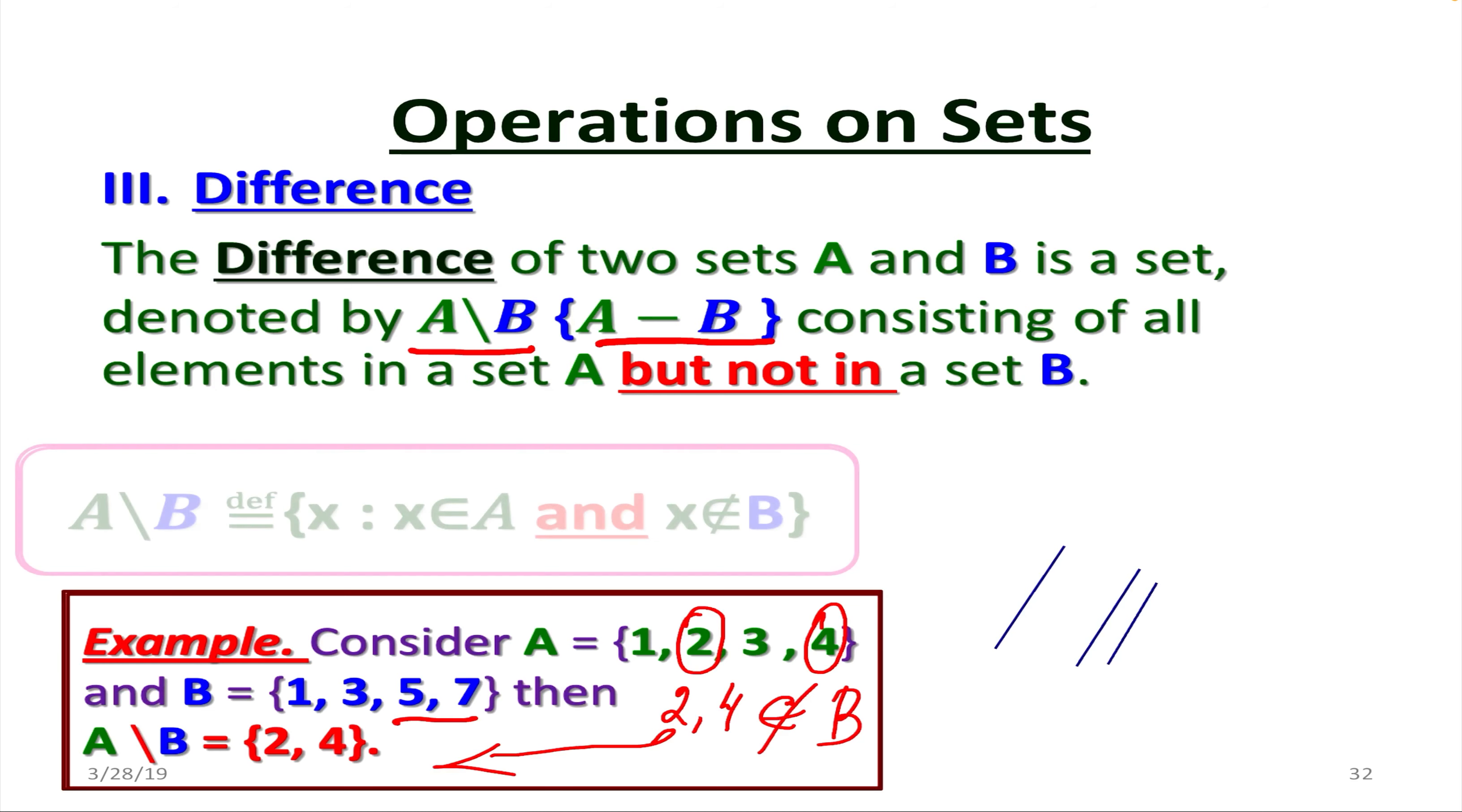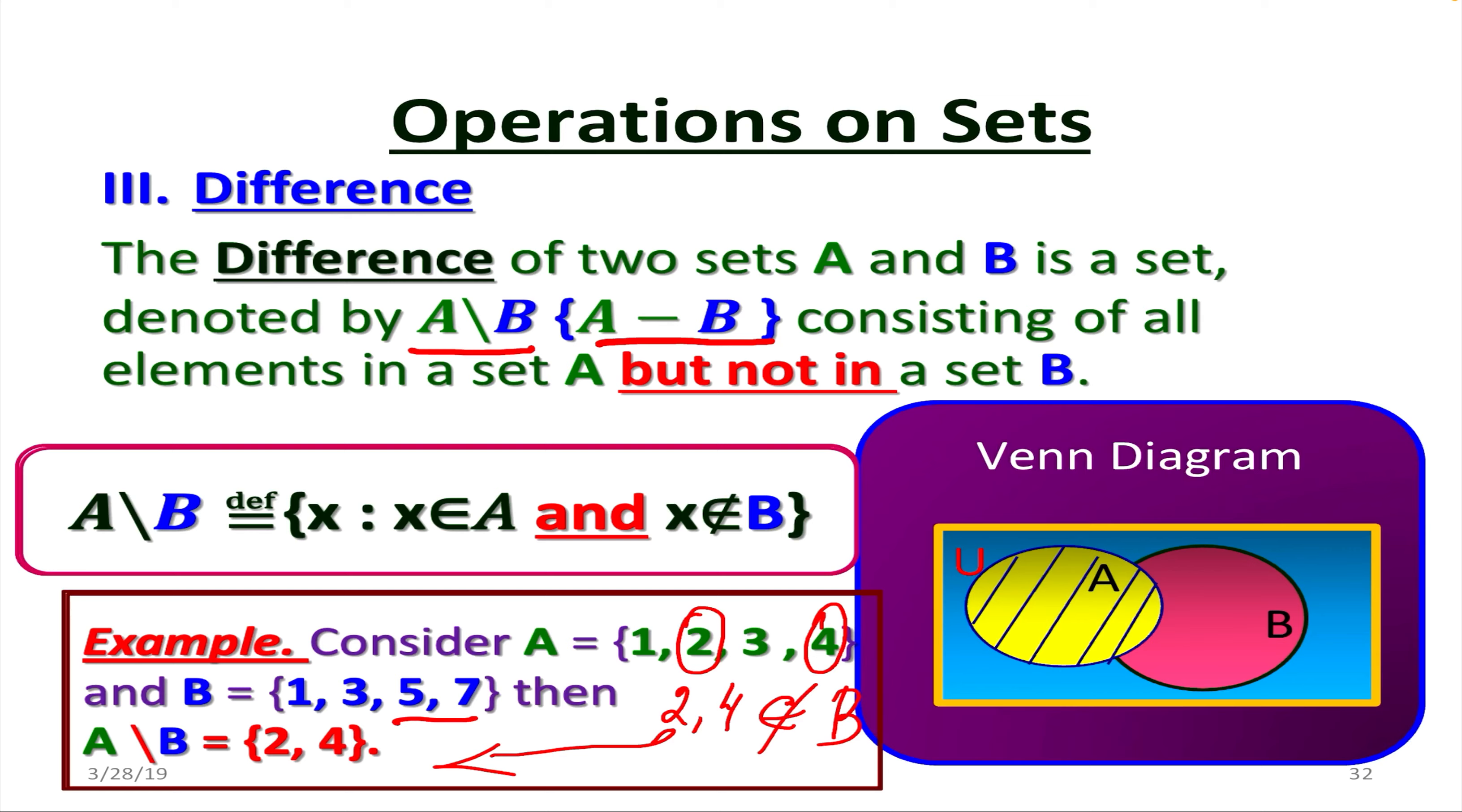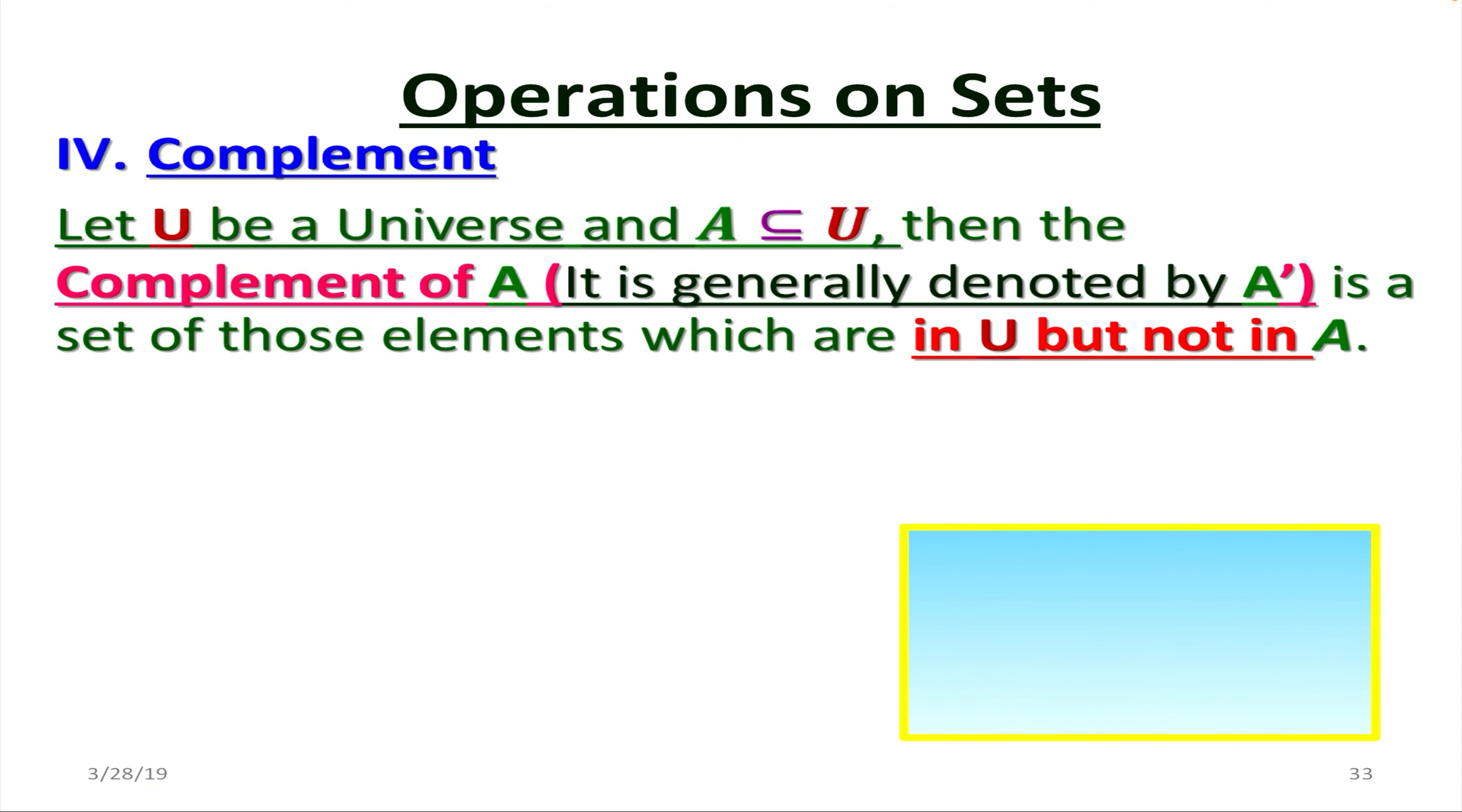So that's why they go to the difference. And the formal definition is A difference B equals all x such that x is from A and x does not belong to B. So this shaded part on the Venn diagram is representing the difference.